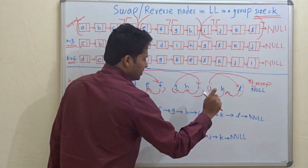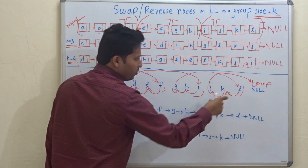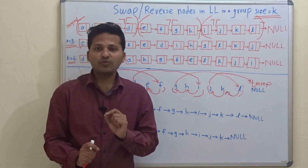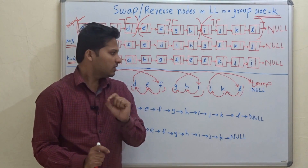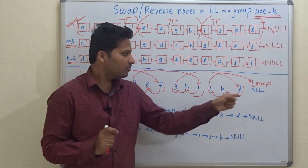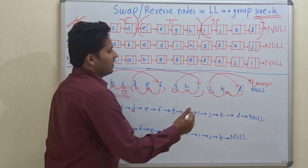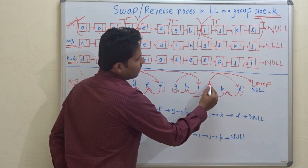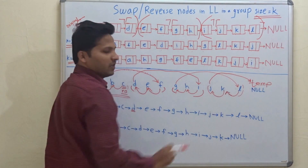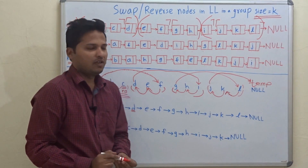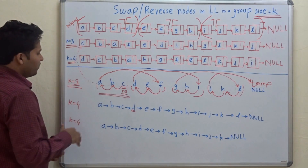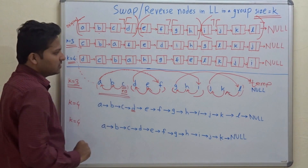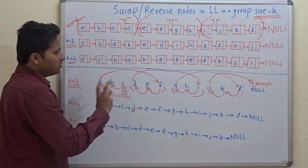And J will point to temp, that is null. So this is the breaking condition. In the last group, we encounter when our temp becomes null. So then the first element of this group will point to temp, because this is the last group. This is how we convert or reverse the nodes in the linked list in groups.